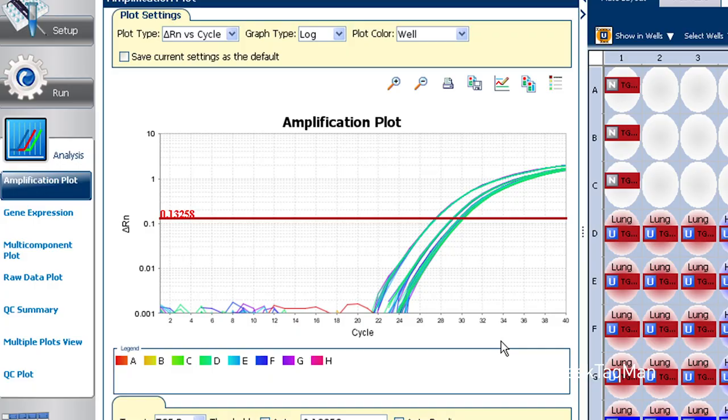Excellent question. The threshold is a horizontal line in our amplification plot that can be moved up or down on the y-axis. Its purpose, as we'll see in a minute, is it tells the software where to take data.